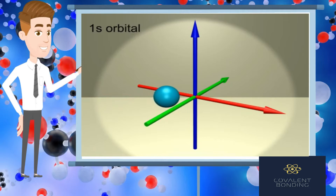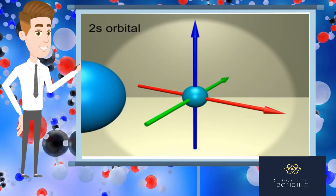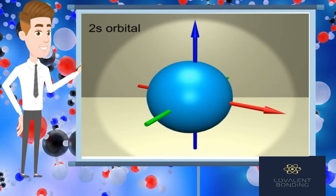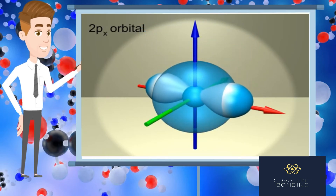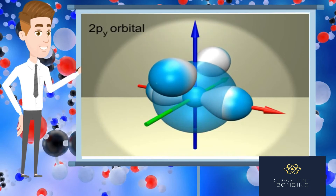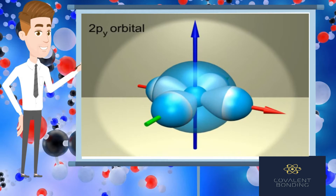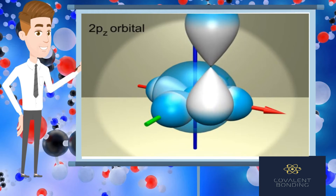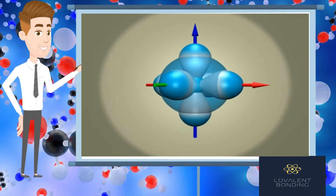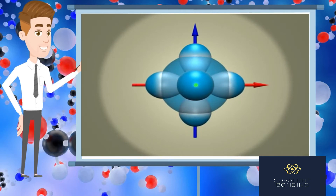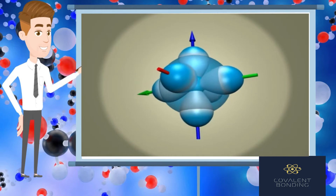Types of orbital overlapping: 1. S-S overlapping — example: hydrogen molecule. Each hydrogen atom has only one electron, 1s1, available for bonding. In the formation of the H2 molecule, the s orbital of one atom overlaps with that of the other, forming a single covalent bond. 2. S-P overlapping — example: hydrogen fluoride molecule, formed by overlapping of the 1s orbital of hydrogen and the 2pz orbital of fluorine. 3. P-P overlapping — example: chlorine, fluorine, and bromine molecules, formed by overlapping of 3pz orbitals of two chlorine atoms. The strength of a covalent bond is related to the extent of overlap between the two combining atomic orbitals.